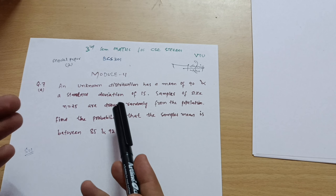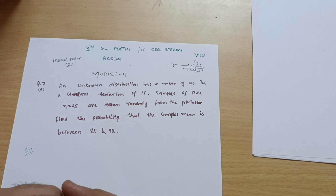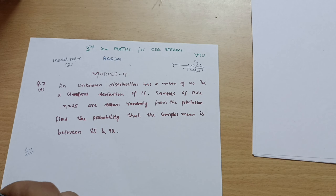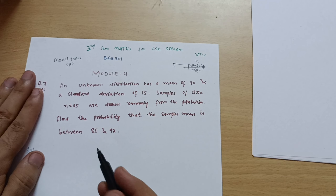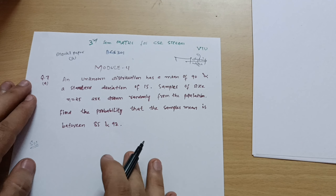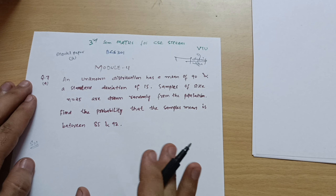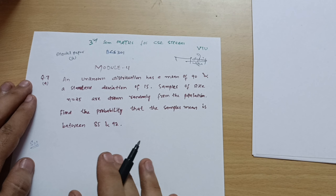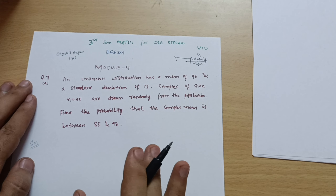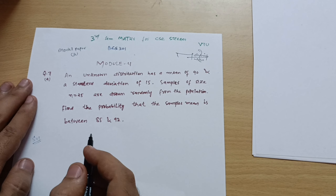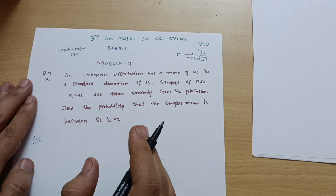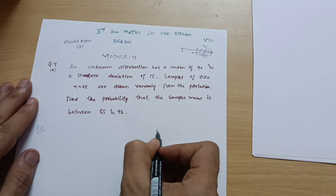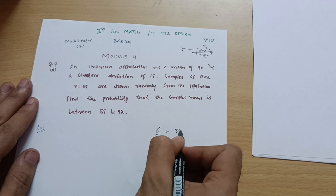Wherever you find an unknown distribution, understand that this question is based on the Central Limit Theorem. The Central Limit Theorem states that the sample mean x̄ follows approximately the normal distribution. The distribution has mean μ and standard deviation σ/√n, which is called the standard error.